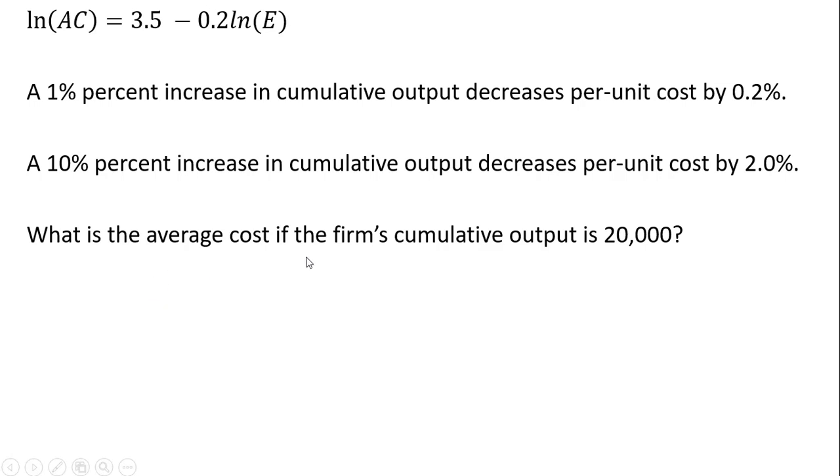What is the average cost if the firm's cumulative output is 20,000? So plug 20,000 into the equation and just simplify this. So minus 0.2 times the natural log of 20,000 is minus 1.981.